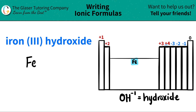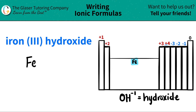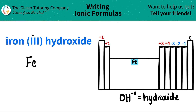Now since it's a transition metal, they can have multiple different charges. What charge am I going to use? That's why there's a Roman numeral. Remember, the Roman numeral always tells you the charge of the metal. In this case, the Roman numeral is 3, so I'm just going to write a plus 3 charge here. I know that it's a plus and not a negative because all metals have positive charges — they love to lose electrons.